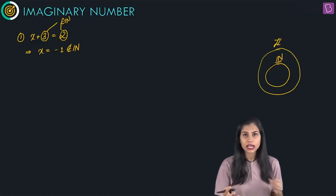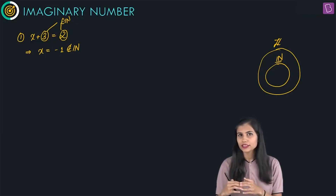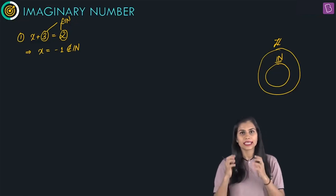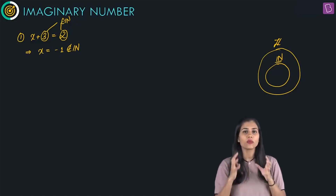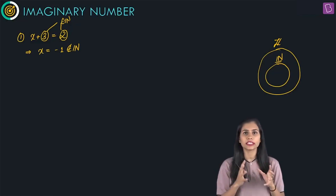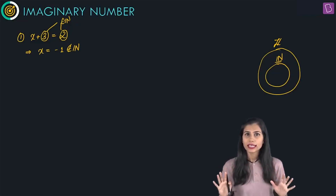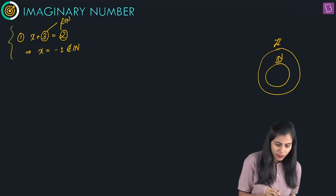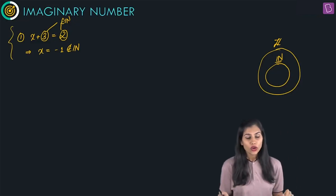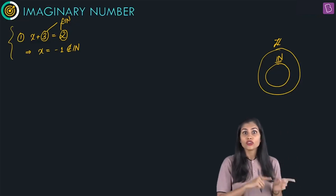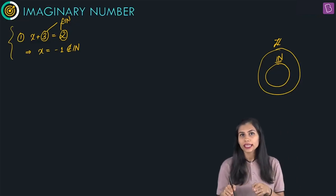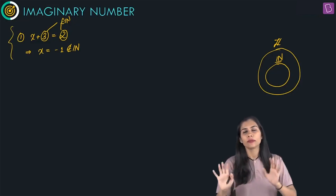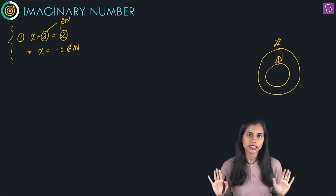The set of integers, apart from consisting of the naturals, also consisted of new numbers like 0, negative 1, negative 2, negative 3, and so on. Thus, any equation belonging to this family which was not solvable in the set of naturals was uniquely solvable in the set of integers.